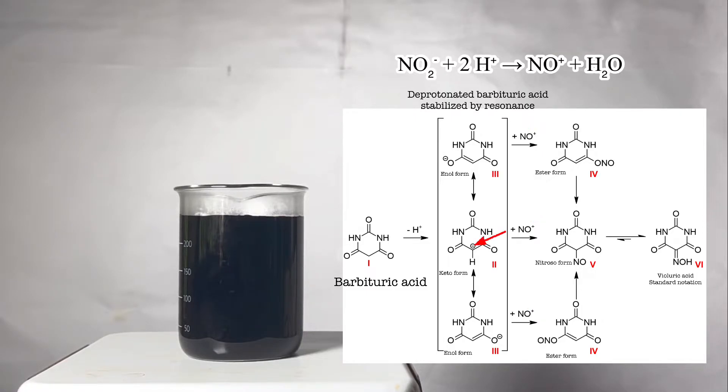The nitrosyl ion can then react with the two forms in different ways. In the keto form, bond between the middle carbon and the nitrosyl group can occur resulting in nitroso form of violuric acid. Reaction with the oxygen takes place in the enol, forming an ester of nitrous acid.